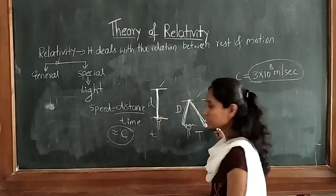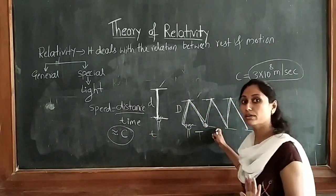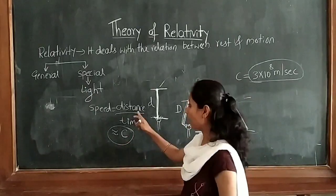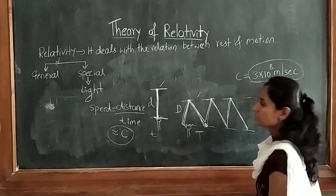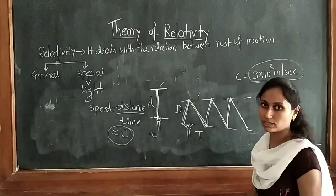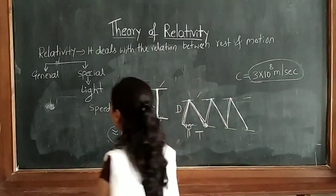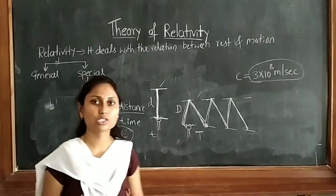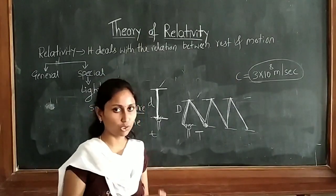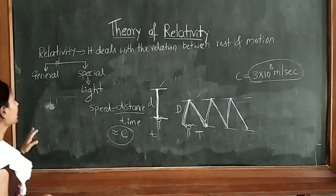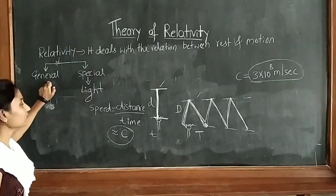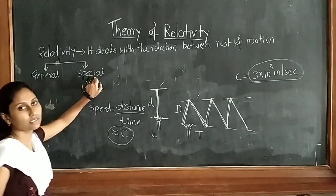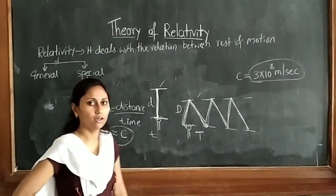I have shown this by a practical example. By theoretical derivation, in the next class I will prove why the speed of light remains constant for all cases. Relativity views the relation between rest and motion particles. In relativity, there are two parts: one is the general theory of relativity and the second is the special theory of relativity.